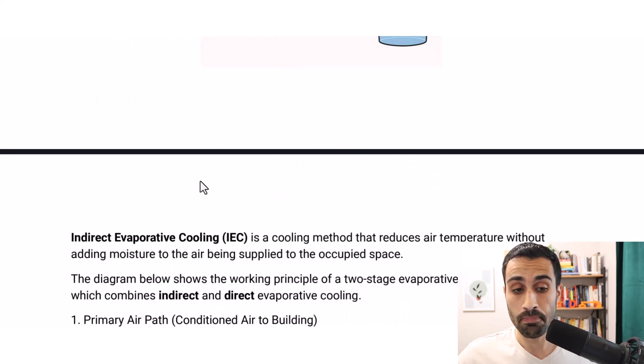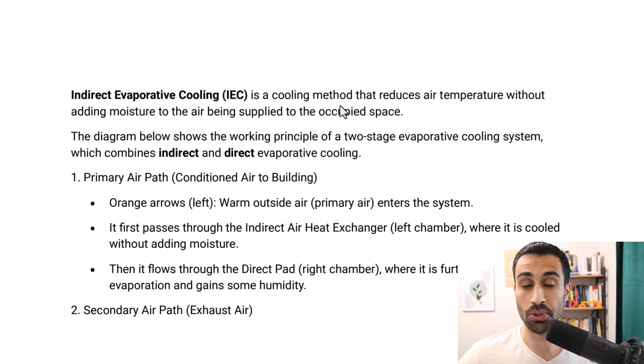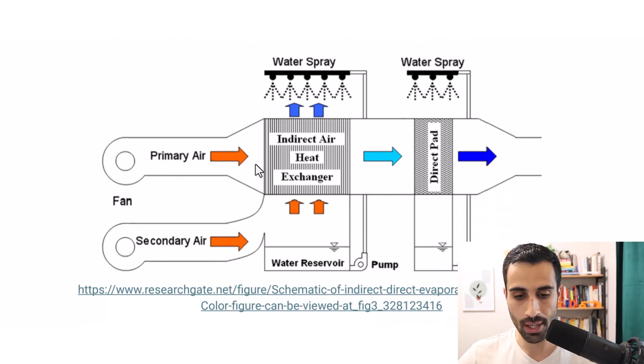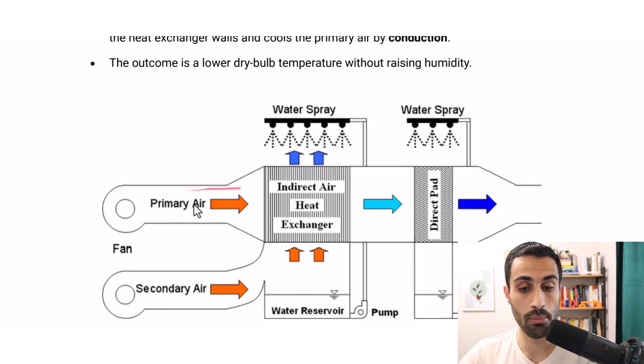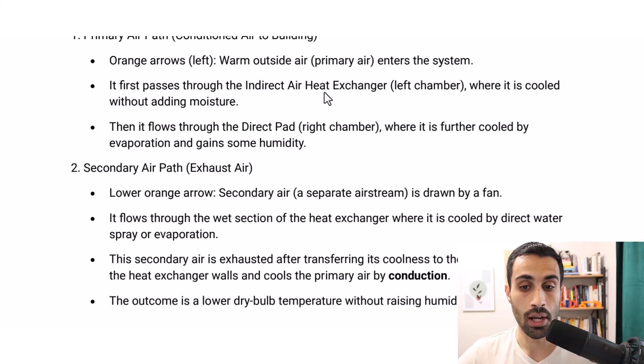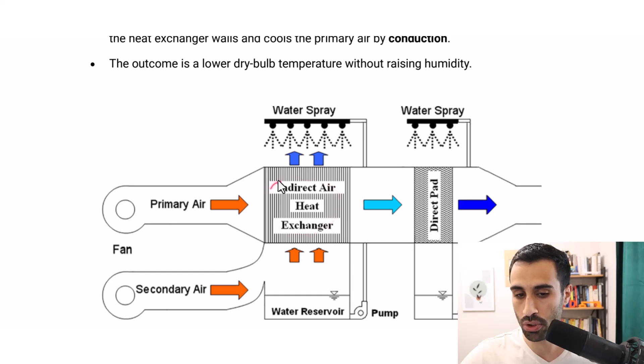Now, our goal is to use that fancy system of indirect evaporative cooling. This is a cooling method that reduces air temperature without adding moisture to air being supplied to the occupied space. In this diagram, we have two processes: indirect and direct. The problem talks about the indirect, and we do use a heat exchanger. What's going on here is we have the primary air, this conditioned air to the building. It's going to go from warm air outside and it enters the system. Then it passes through the indirect air heat exchanger, the left chamber, where it is cooled without adding moisture in the heat exchanger.